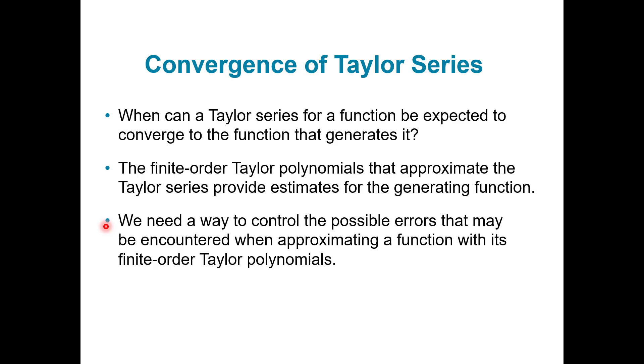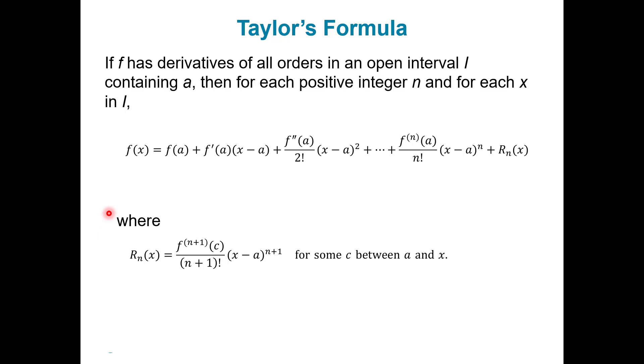So we need a way to control the possible errors that can be encountered when we're approximating a function with a Taylor series or a Taylor polynomial. And so we're going to look at a formula and then a remainder. So Taylor's formula says the following: If your function f has derivatives of all orders, so basically if you can keep taking derivatives in some open interval containing a, where if you remember a was the center, then for each positive integer n and for each x in that interval the following is true.